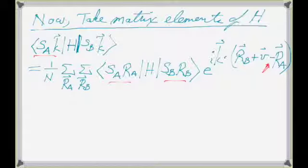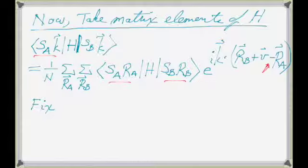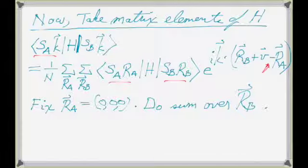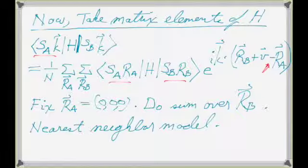We're going to evaluate this just like in 1D, but now in 3D. We fix R_A — the outer loop — and do the inner loop over R_B. Fix R_A equal to the origin, the A atom at the origin. We're working in a nearest-neighbor model, and there are four nearest neighbors. So we just need to find where the four nearest B atoms are with respect to that A atom at the origin — those are the only ones giving a non-zero matrix element.